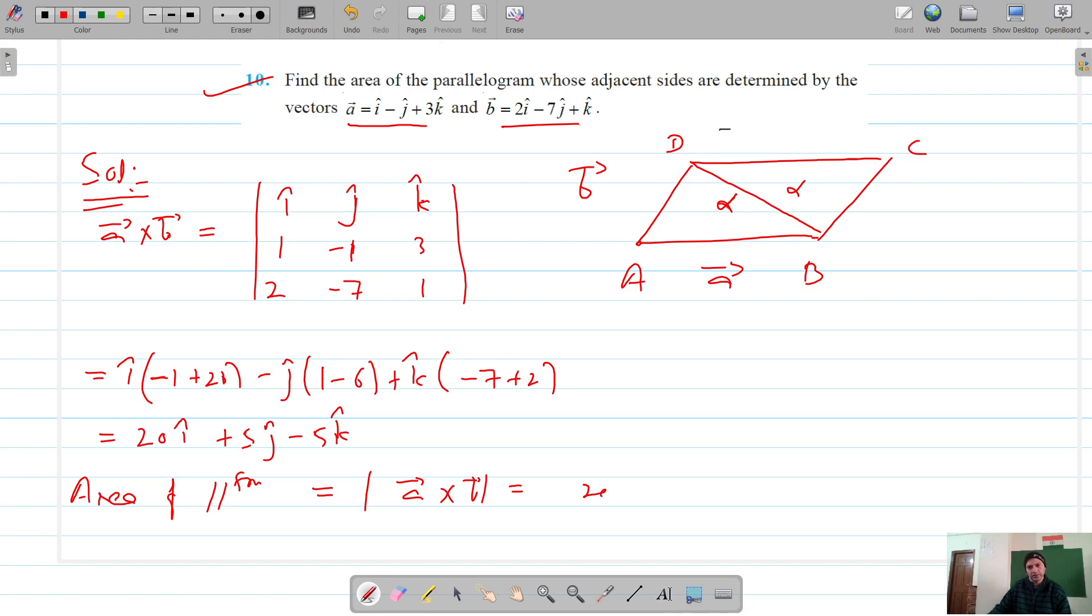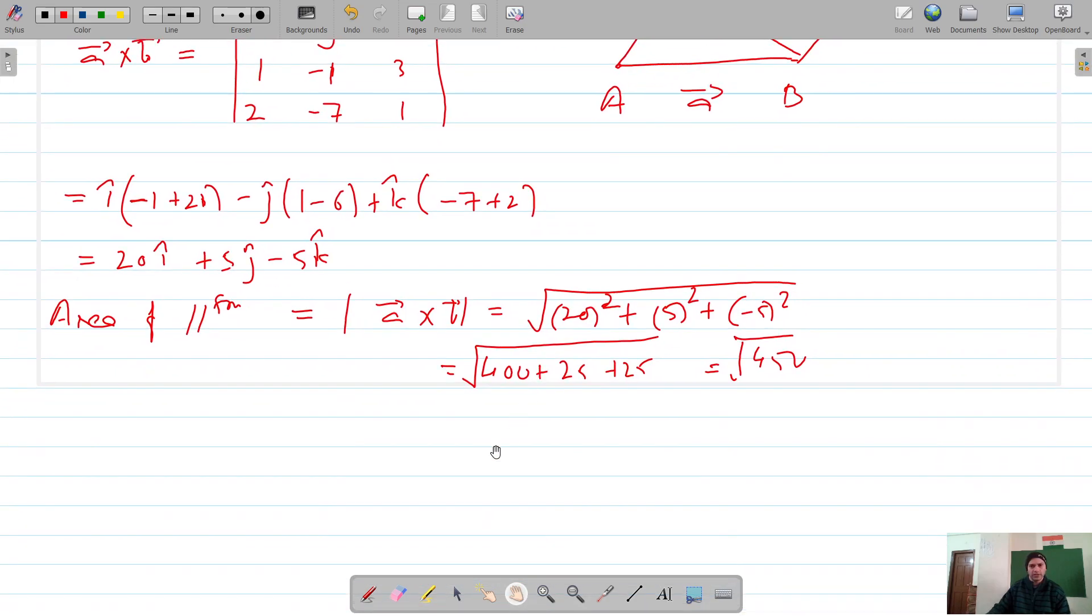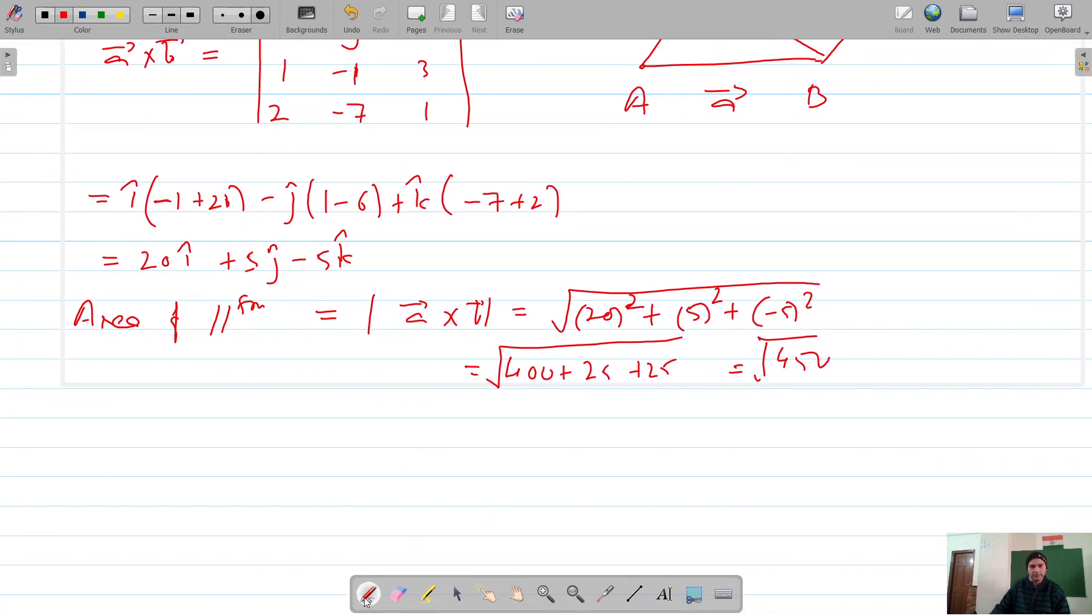That should be the square root of 20 squared plus 5 squared plus negative 5 squared, which equals the square root of 400 plus 25 plus 25, which equals the square root of 450. If we try to factorize 450,